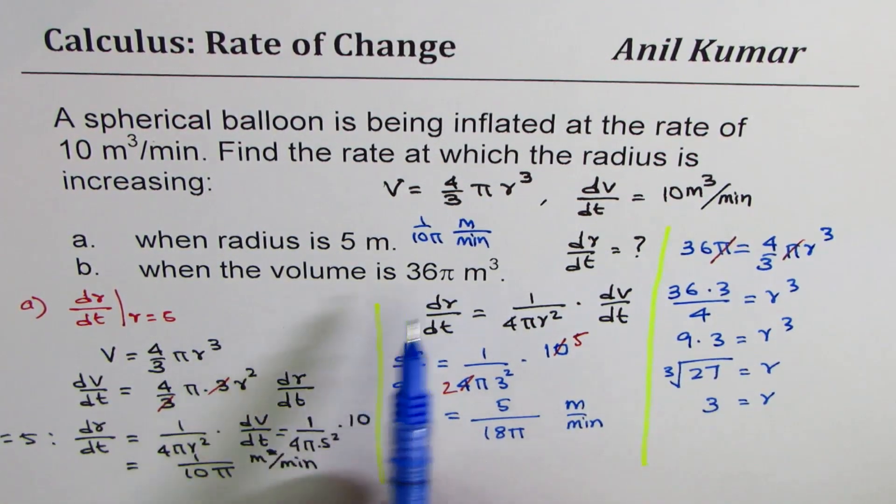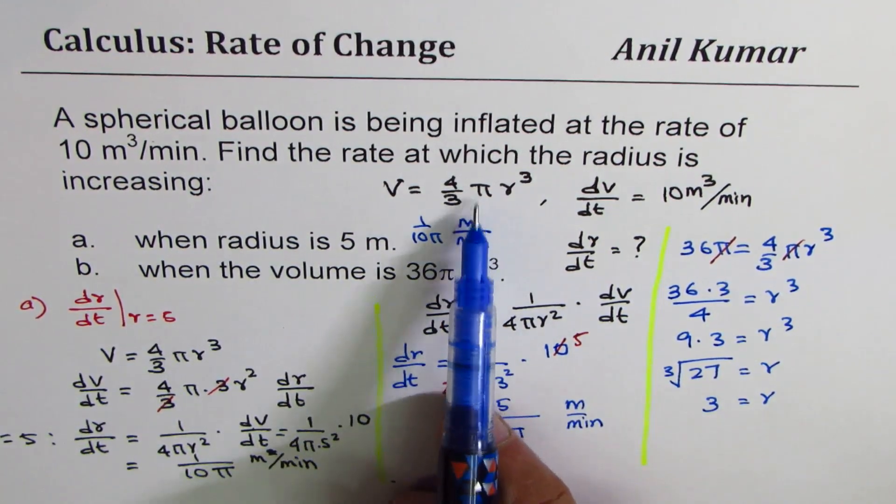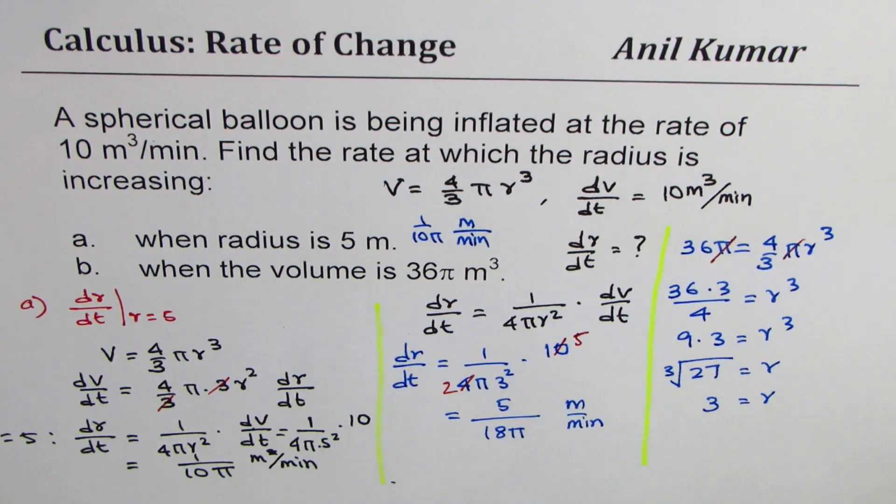So in part b, you have to calculate what is the radius when volume is 36 pi meter cube using the formula itself. I hope that helps you to understand the concept. Thank you and all the best.